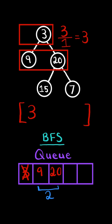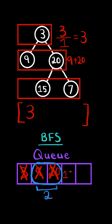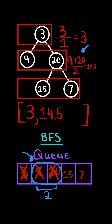Now we have two elements in our queue, so we will iterate two times. We pop from the queue and add node 9's value to the sum. Node 9 does not have any children, so we don't append to the queue. We pop again and add node 20's value to the sum. Since node 20 has children, we append them to the queue. Now we are done iterating two times, so we divide the sum by the number of iterations to get the average in the level, and we append the average to the resulting list. Then we continue to the next level.